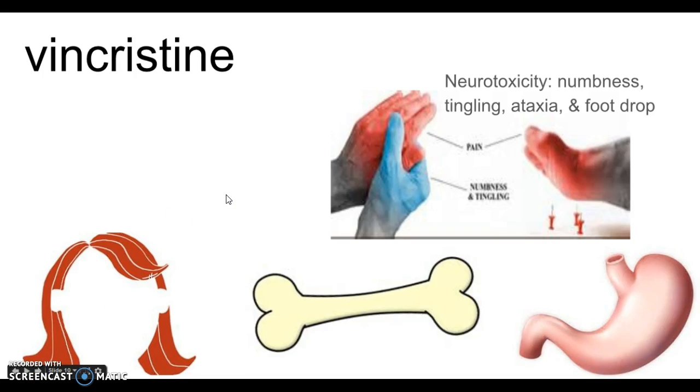First, we're going to talk about vincristine. Another form of it is vinblastine. They're similar enough that we can talk about one and cover what you need to know about both. Side effects: they're going to have alopecia, they're going to lose their hair, skin problems, bone marrow suppression and all the things that go with that, and of course, all the GI epithelium.